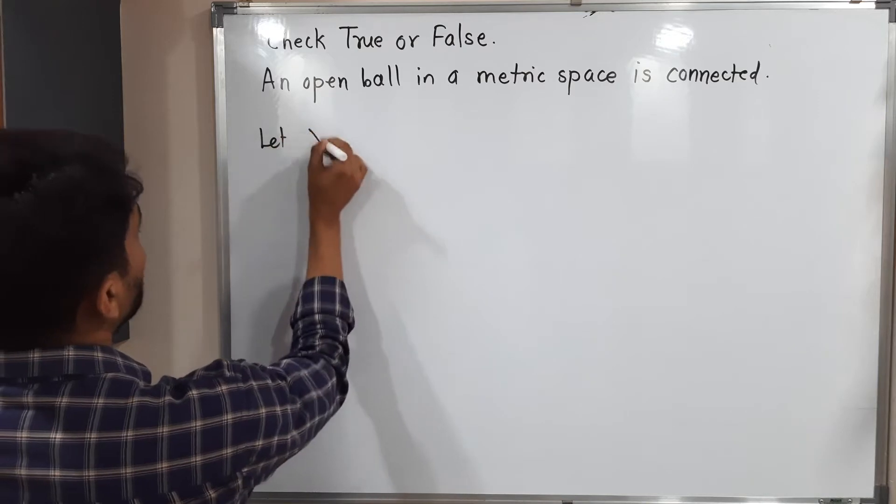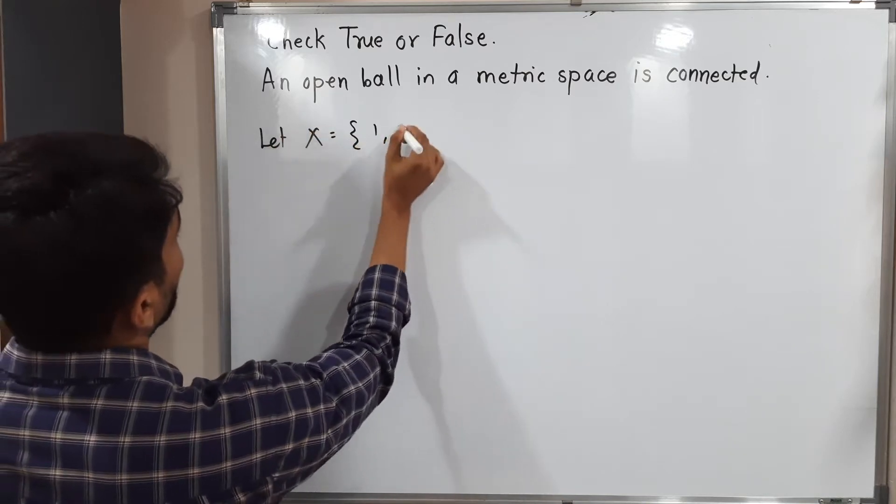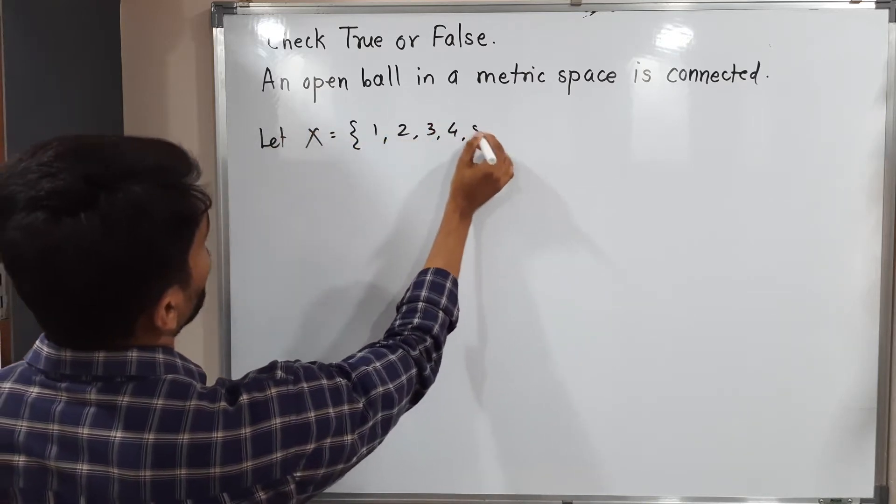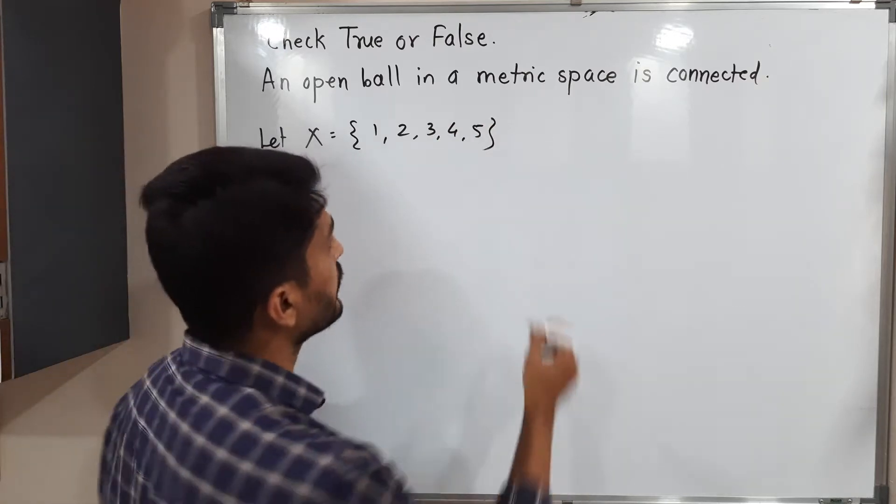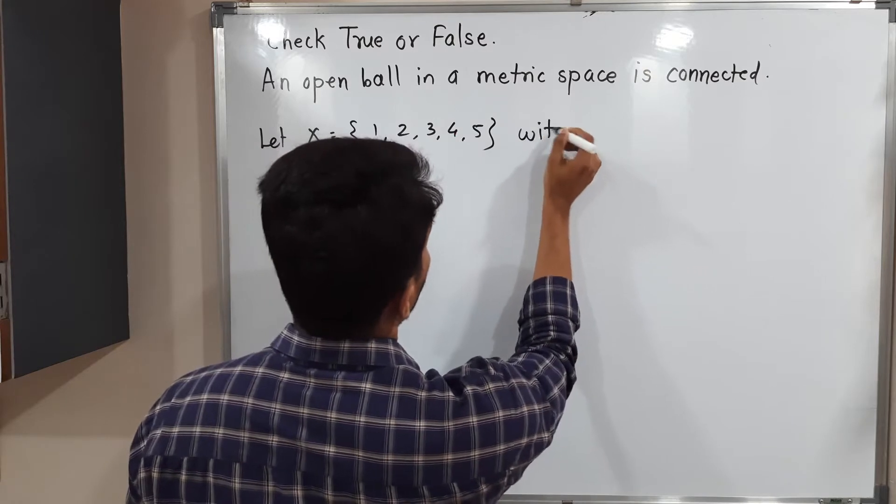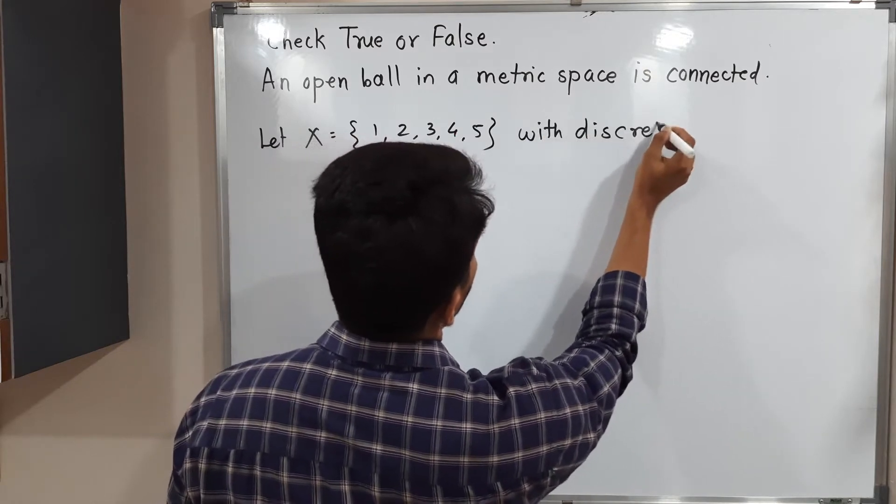I am considering one example. X is equal to 1, 2, 3, 4, 5. I have considered a set having only 5 elements: 1, 2, 3, 4, 5 with discrete metric space.